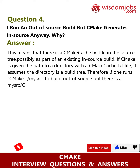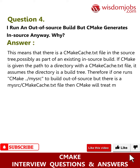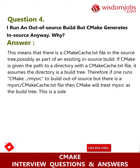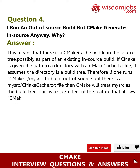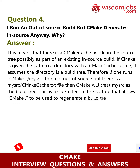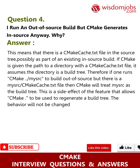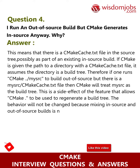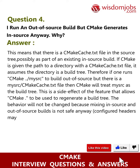Therefore, if one runs cmake /mesh to build out-of-source but there is a mesh/CMakeCache.txt file, then CMake will treat mesh as the build tree. This is a side effect of the feature that allows CMake to regenerate a build tree. The behavior will not be changed because mixing in-source and out-of-source builds is not safe anyway — configured headers may be found in the wrong place.